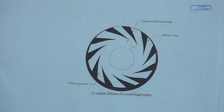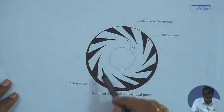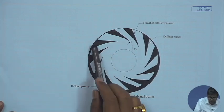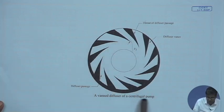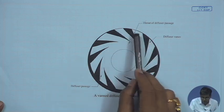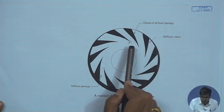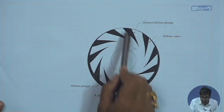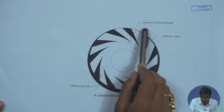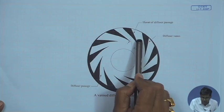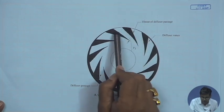Here you can see a typical diffuser with vanes — these are the vane diffusers of a centrifugal pump, showing only the vane part. This is the diffuser vane, which gives a diverging area. The diffuser throat is initially a little convergent, and then ultimately it becomes divergent.